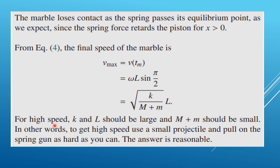For high speeds, K and L need to be larger, while (M + m) in the denominator should be small. In other words, to get high speed, use a small projectile and pull the spring gun back as far as you can — L should be maximized and M should be minimized.